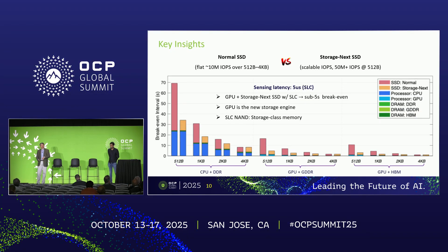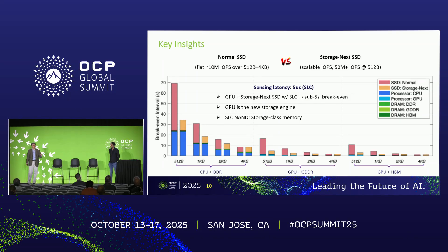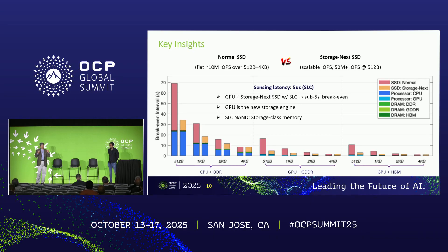If we switch from TLC to SLC, it becomes much more interesting. Especially combined with GPU, for half-K byte blocks, the break-even is reduced from minutes to just five seconds or below. Compared to the original five-minute rule, we have at least a 60x reduction in the break-even. That means we can much more readily use SSD as memory to host the active working set. It turns out we don't need exotic new devices — SLC flash is already qualified as storage-class memory.